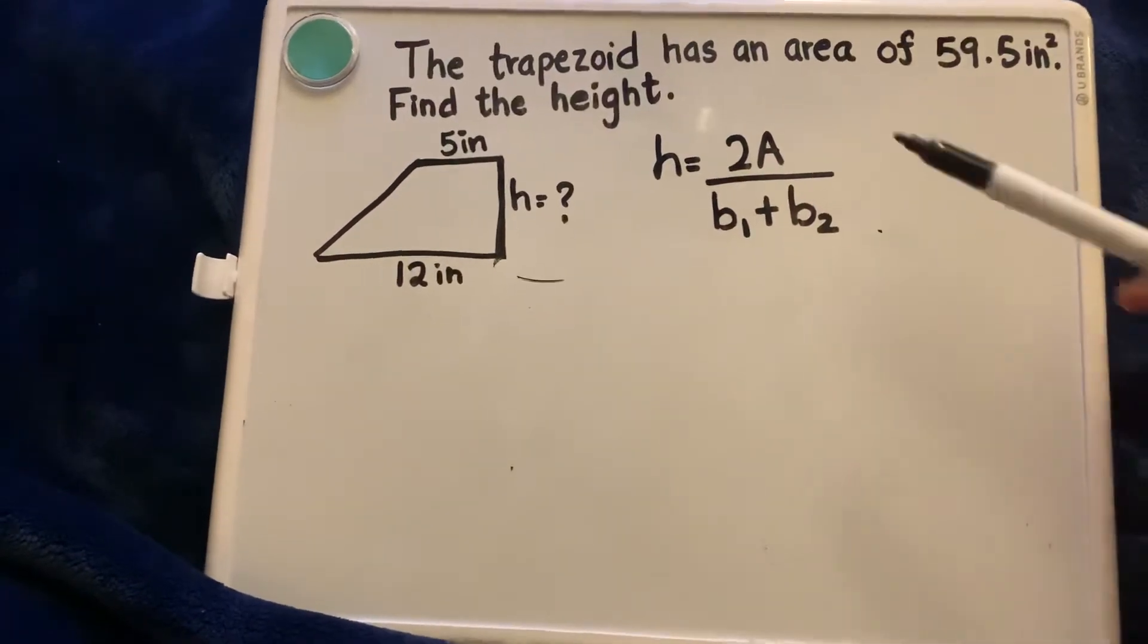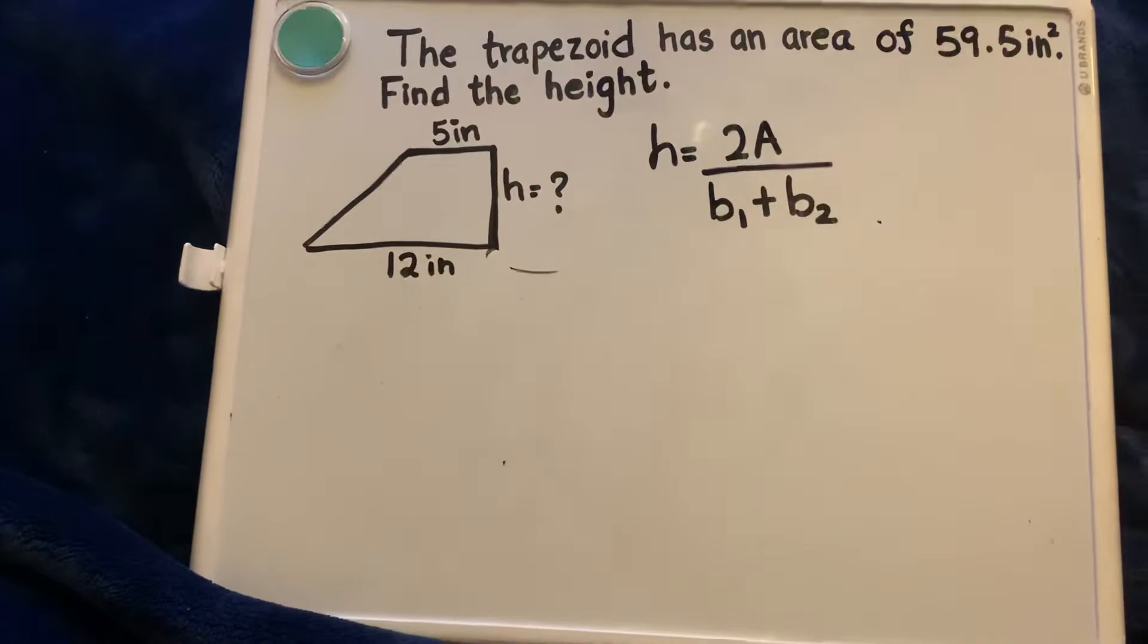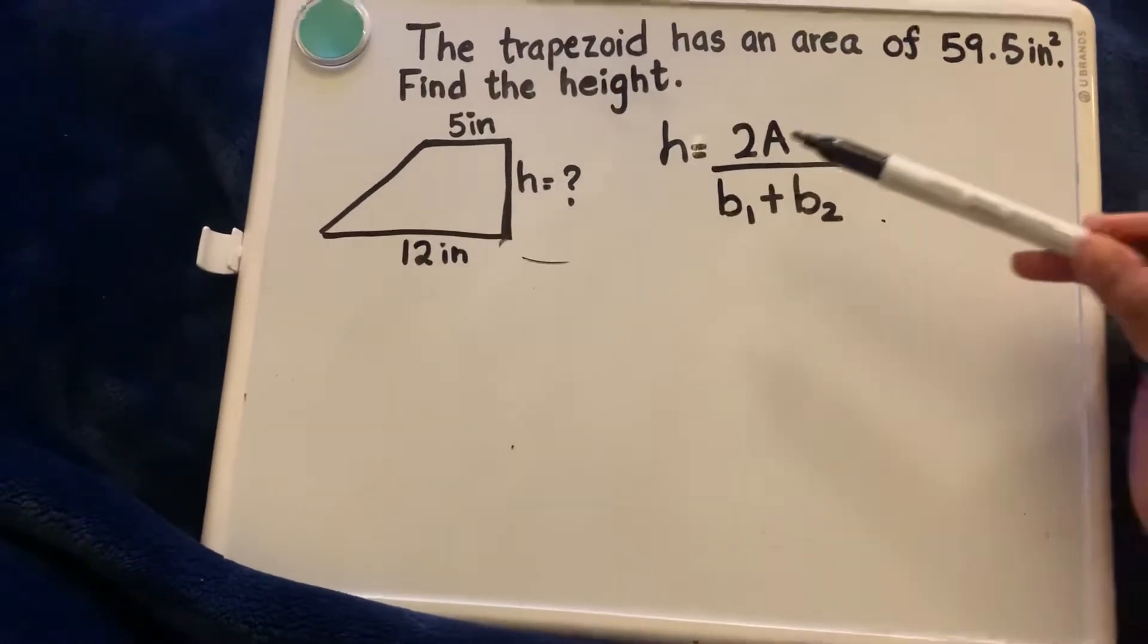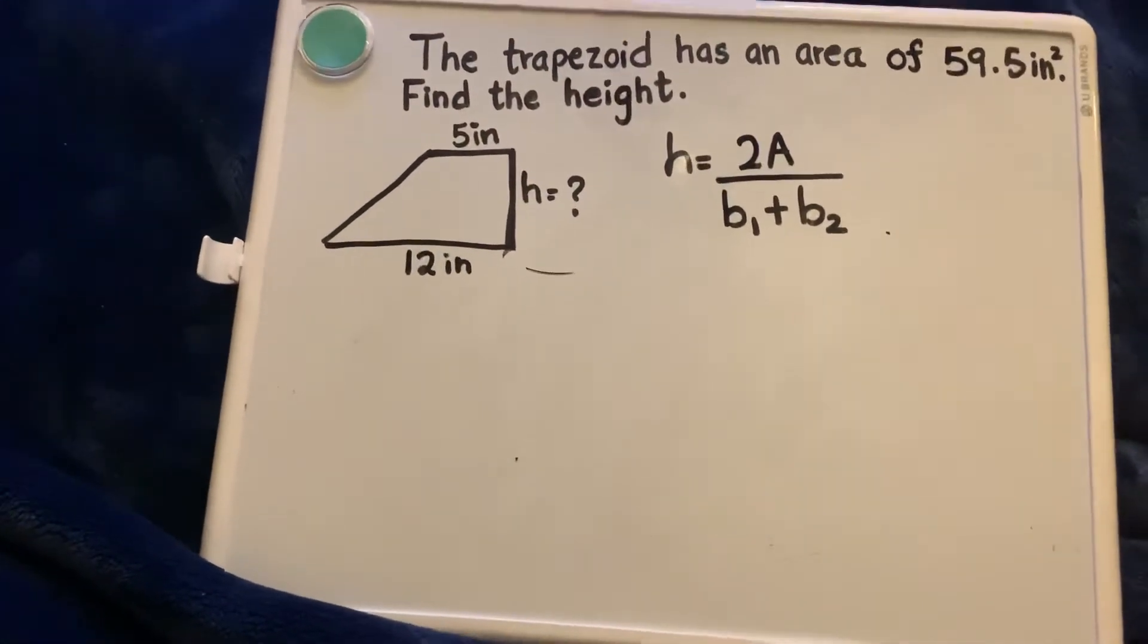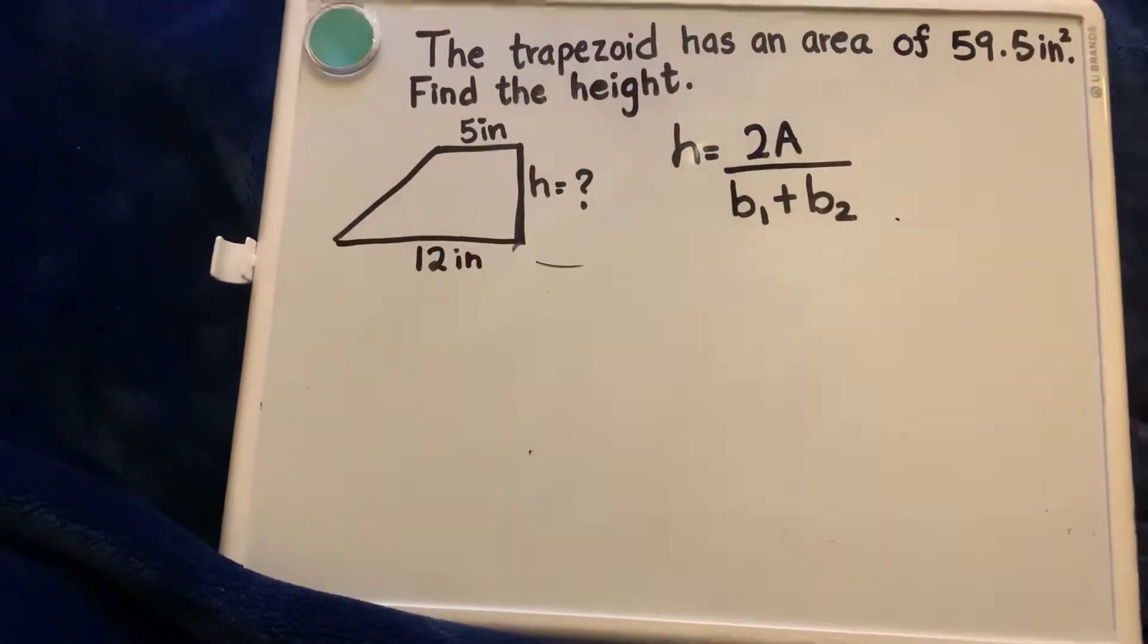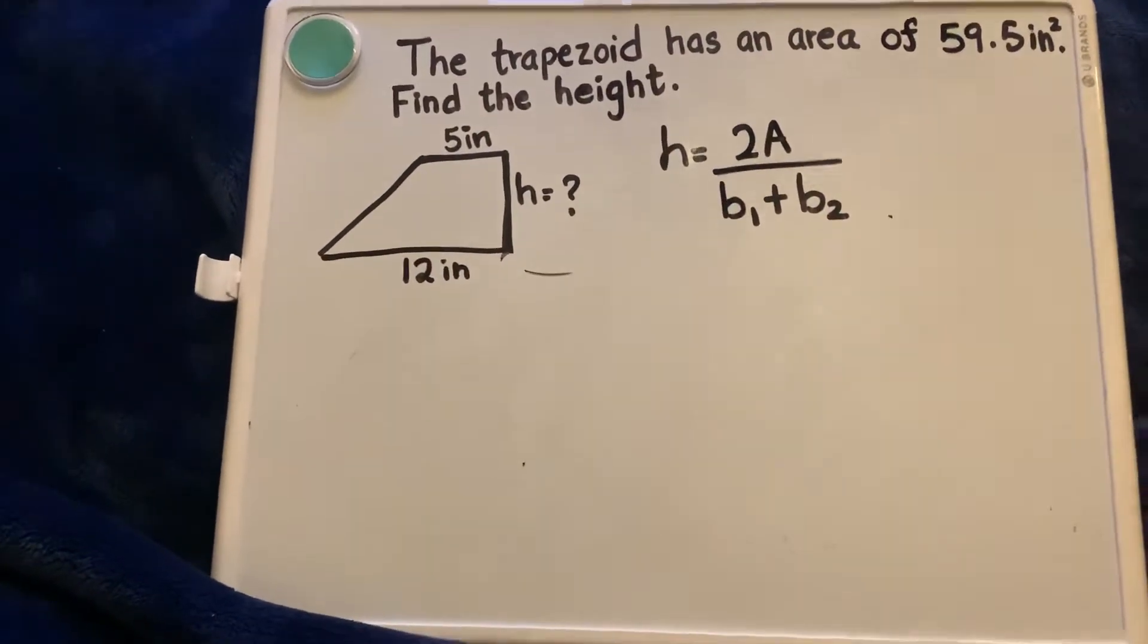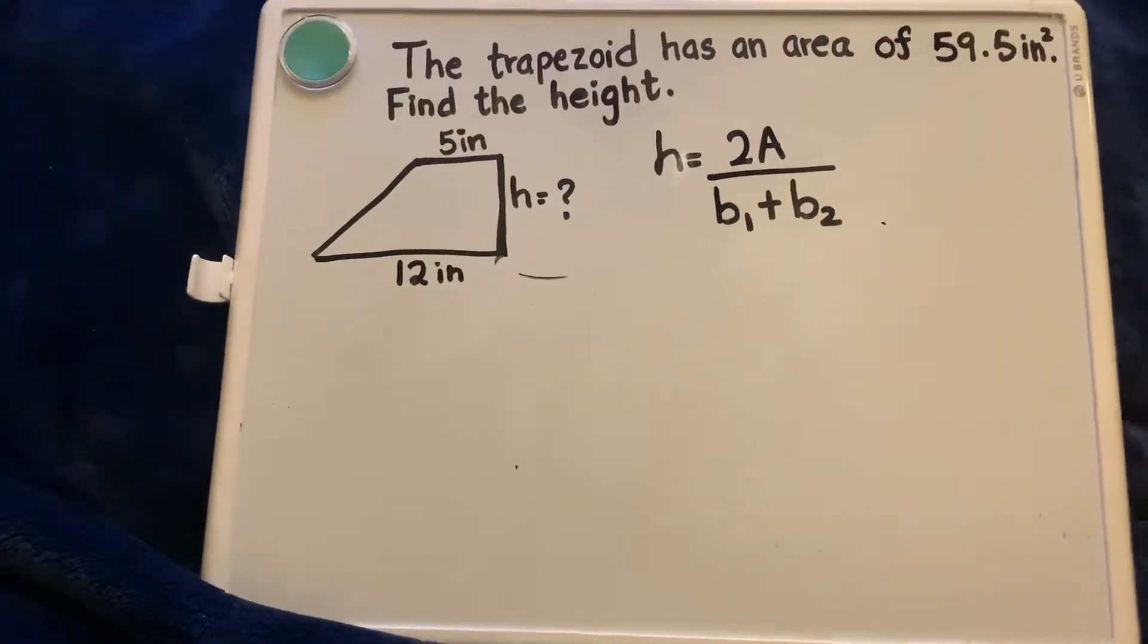The formula tells us to multiply the area by 2. The uppercase A stands for area, so height equals 2A means 2 times area divided by the sum of base 1 and base 2. You have to divide twice the area of the trapezoid by the sum of base 1 and base 2, which means you add them together.